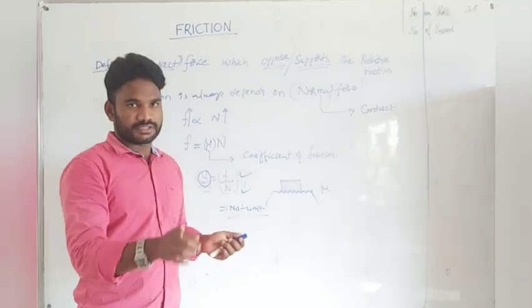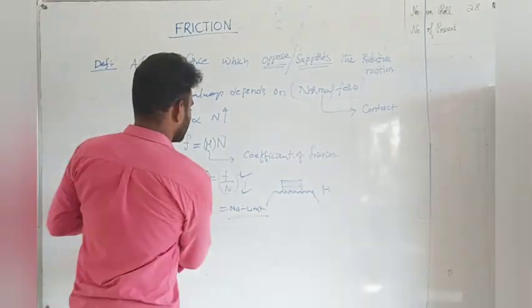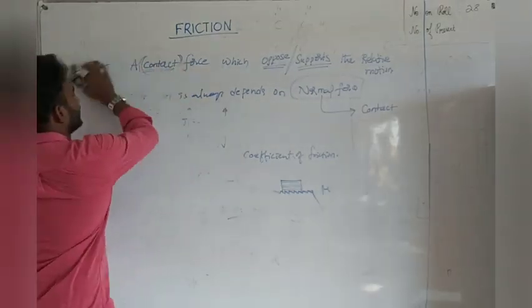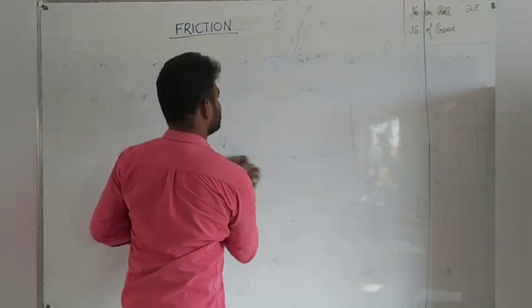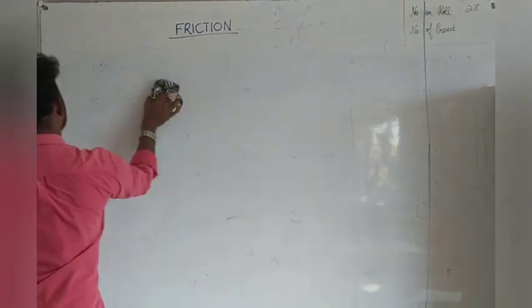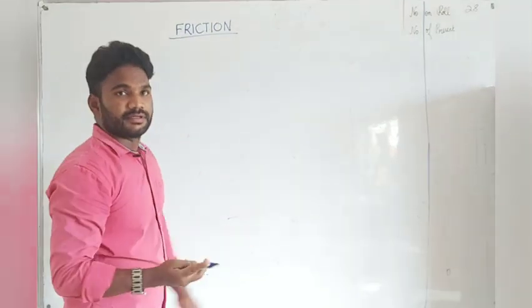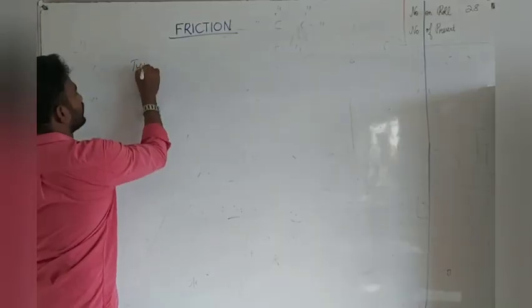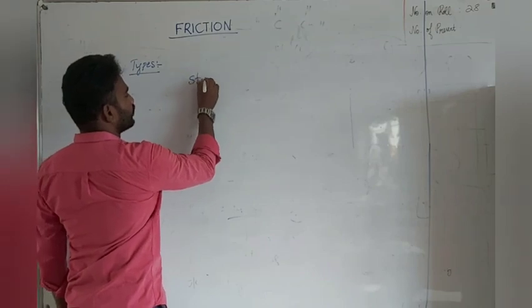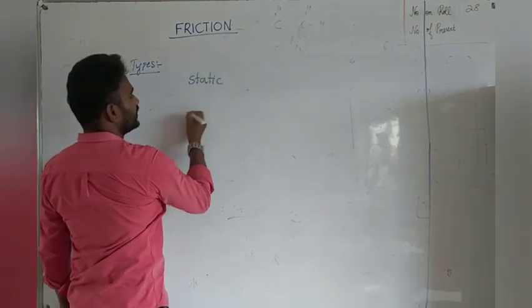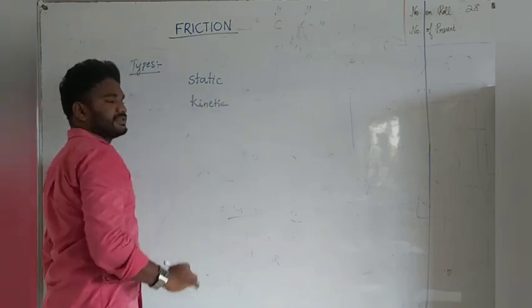Next, let us go for types of friction. There are two types of friction: one is static friction and another one is kinetic friction. Static friction means when there is no relative motion between two bodies. If there is any relative motion, that is called kinetic friction.